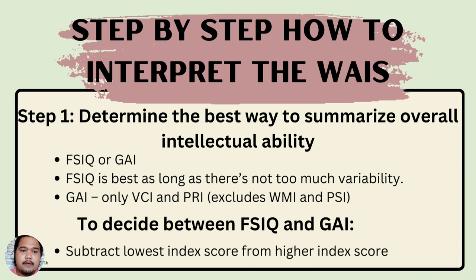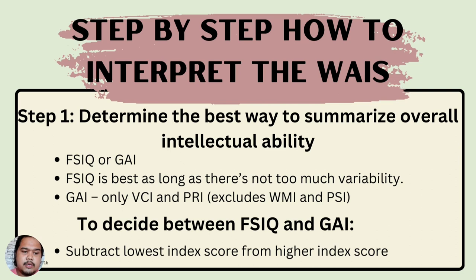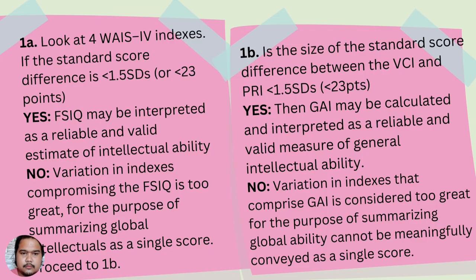What is the difference between FSIQ and GAI? FSIQ, or Full-Scale IQ, comprises all the subtests, and is best used when there is not too much variability. GAI, or General Ability Index, is only comprised of the Verbal Comprehension Index (VCI) and the Perceptual Reasoning Index (PRI). GAI is composed of strong measures of general ability and is especially useful for estimating general ability when scores on memory tests such as WMI or speed tests such as PSI deviate significantly from scores on verbal and non-verbal tasks. To decide between FSIQ and GAI, subtract the lowest index score from the highest index score.